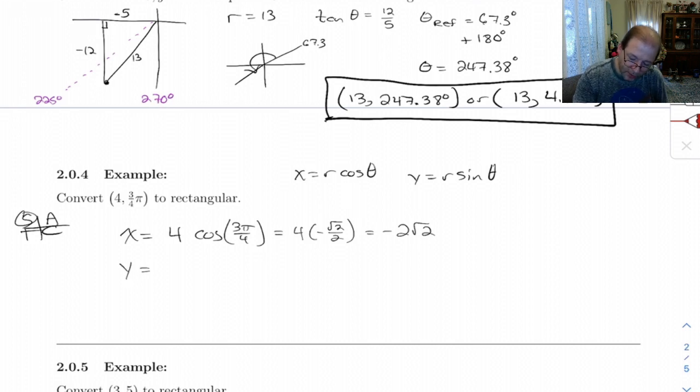And y is 4 sine 3 pi over 4. So that's 4 times, let's see. Again, we're in the second quadrant. 3 pi over 4. Sign is positive there. So positive root 2 over 2.